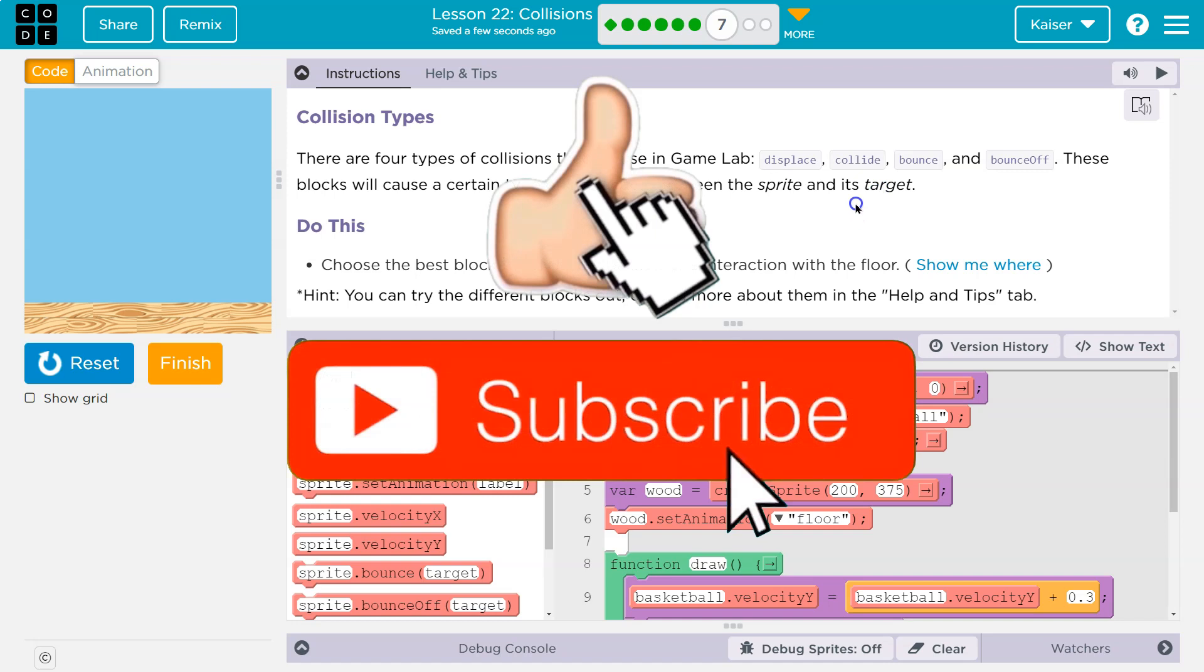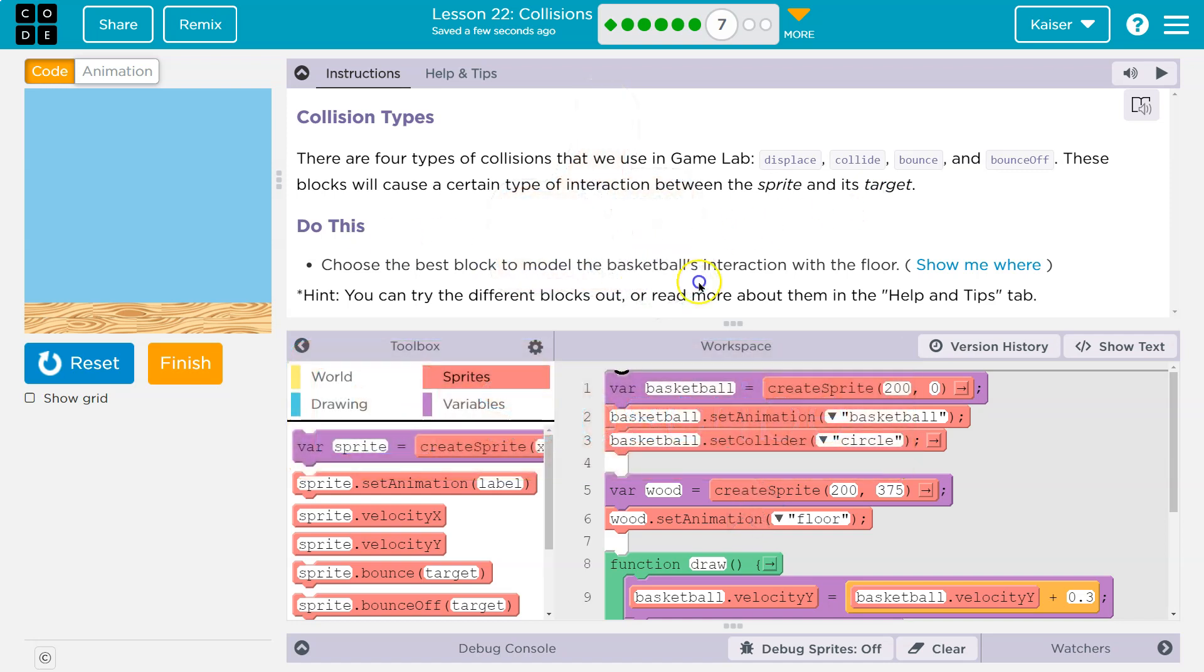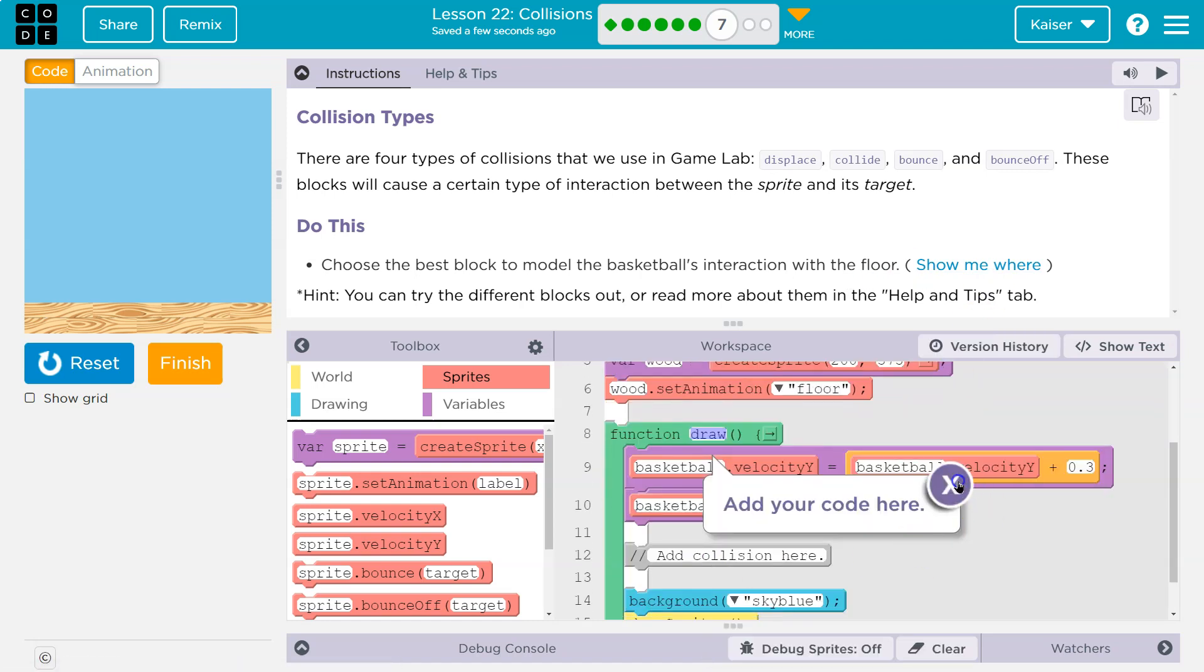Keep in mind the target will usually be another sprite. The task is to choose the best block to model the basketball's interaction with the floor. It wants it in the draw loop. Keep in mind the draw loop runs 30 times a second.